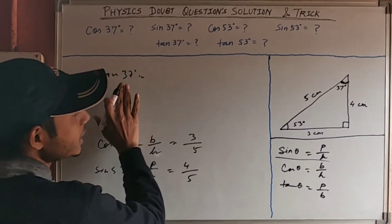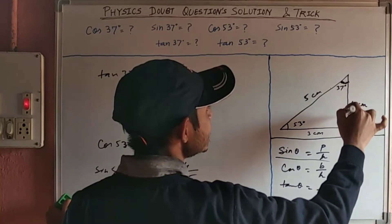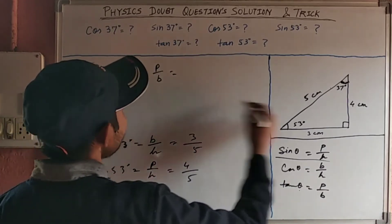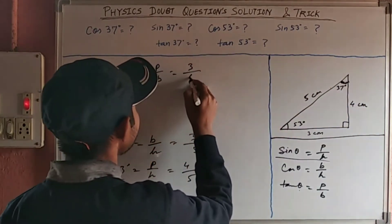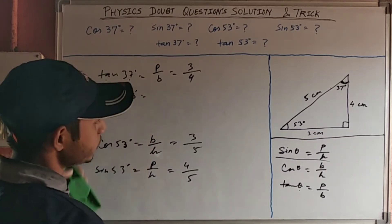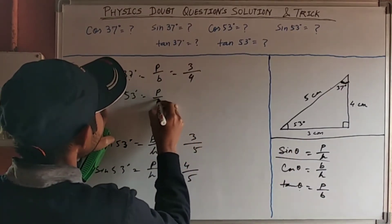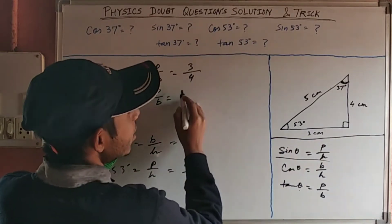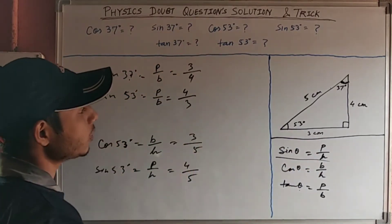Now tan 37°. With respect to the 37° angle, this is the height, this is the base, and this is the hypotenuse. tan θ = perpendicular / base. The perpendicular is 3 and the base is 4. So tan 37° = 3/4. Now tan 53°: with respect to 53°, tan θ = perpendicular / base. The height (perpendicular) is 4 and the base is 3. So tan 53° = 4/3.